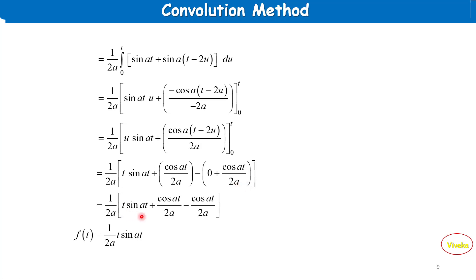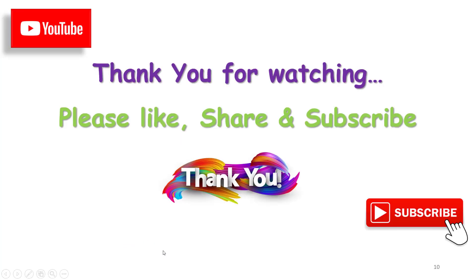Simplifying: t·sin(at) + cos(at) − cos(at), divided by 2a. The final answer: f(t) = (1/2a)·t·sin(at). Thank you for watching this video, please like, share and subscribe.